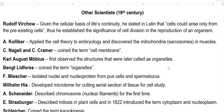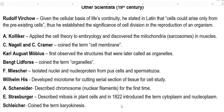This topic is divided into two parts: scientists who lived in the 19th century, and scientists of the 20th century. The first scientist we study is Rudolf Virchow. He gave the cellular basis for life's continuity and is very famous for the phrase 'cell could arise only from pre-existing cells.' His discoveries established the importance of cell division as it prevails in living organisms.